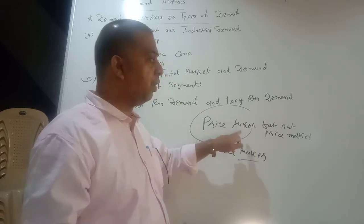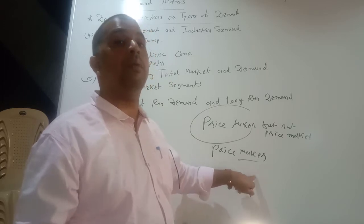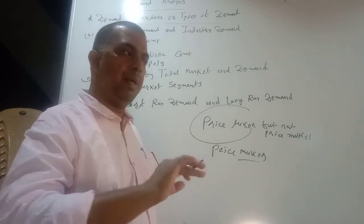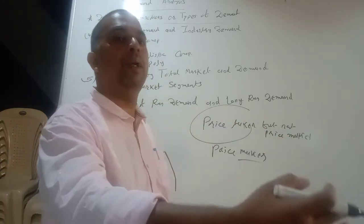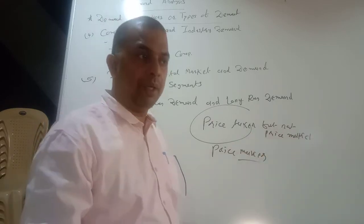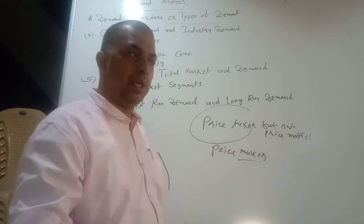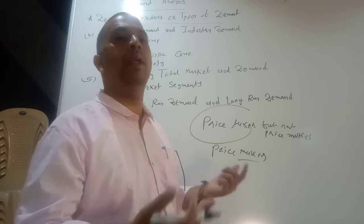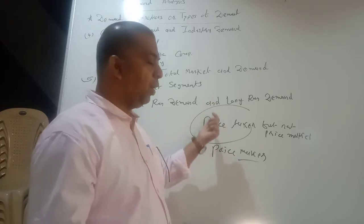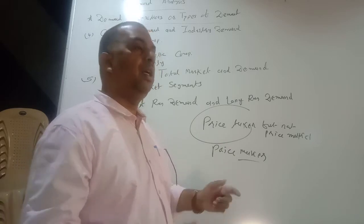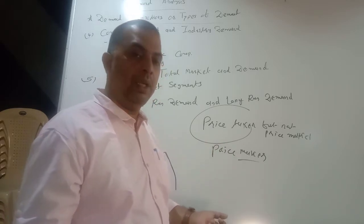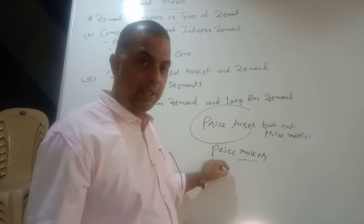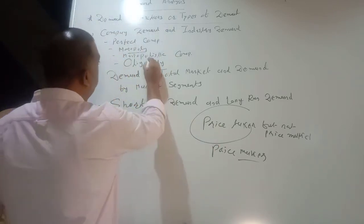In perfect competition, the firm is a price taker but not a price maker. In monopoly, the firm is a price maker but not a price taker. There is a single firm. Examples near to monopoly include Indian Railway and the Indian Postal Department — these are examples of a single-seller market. Because there is a single seller in the market, there is no difference between firm and industry. Indian Railway is itself a firm and itself an industry. The firm has complete control over price.